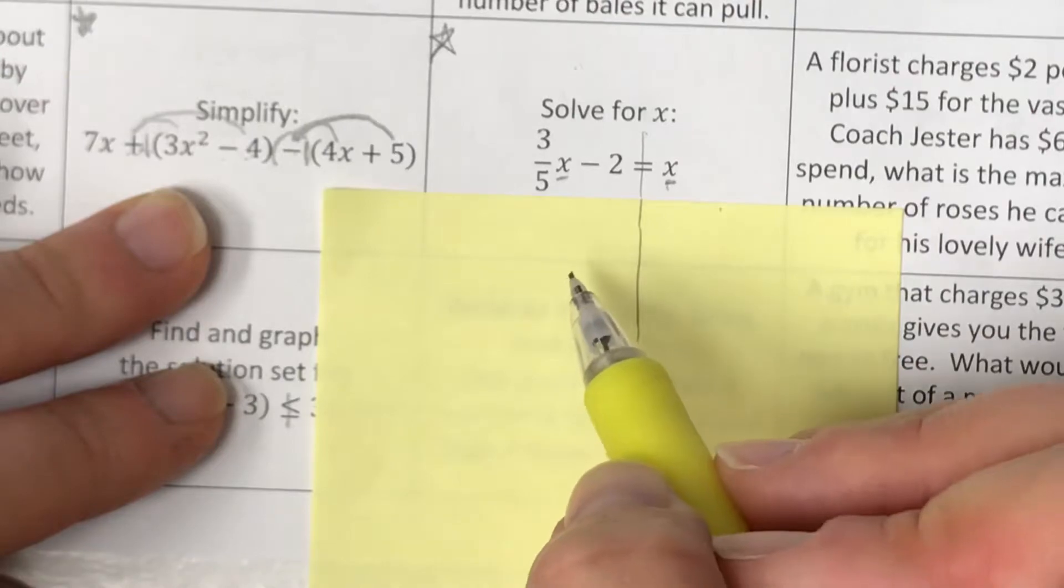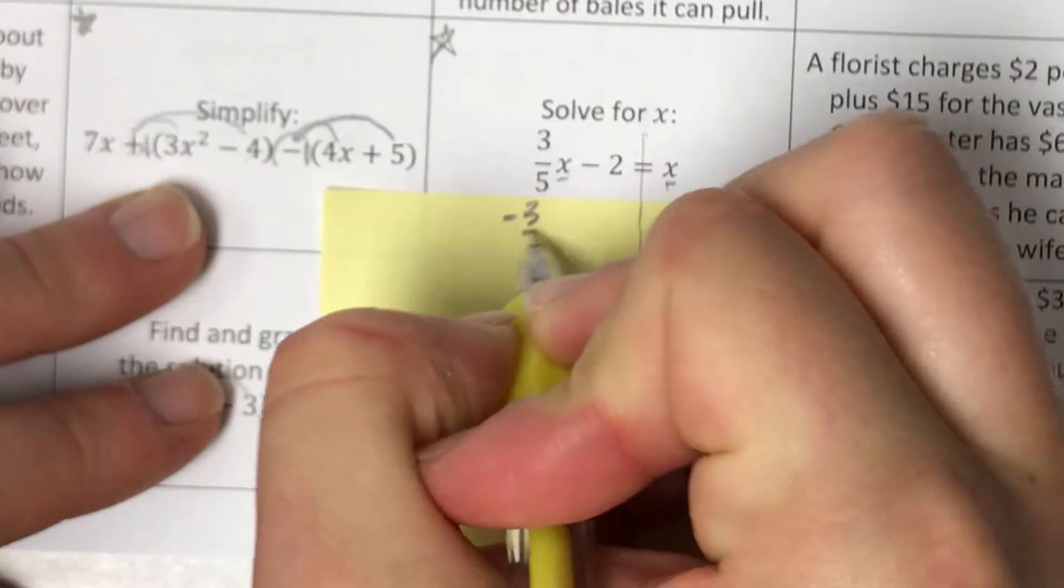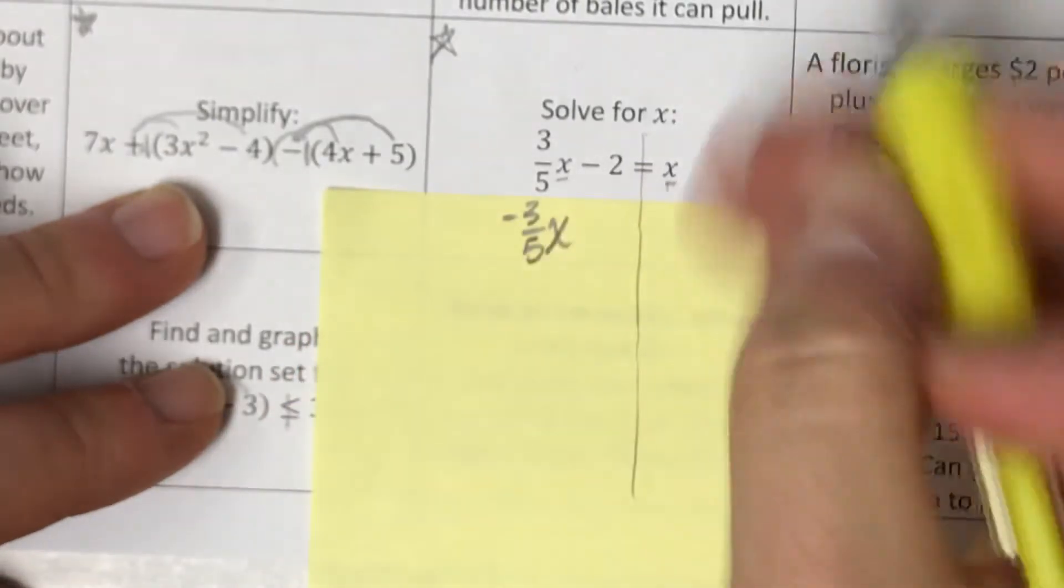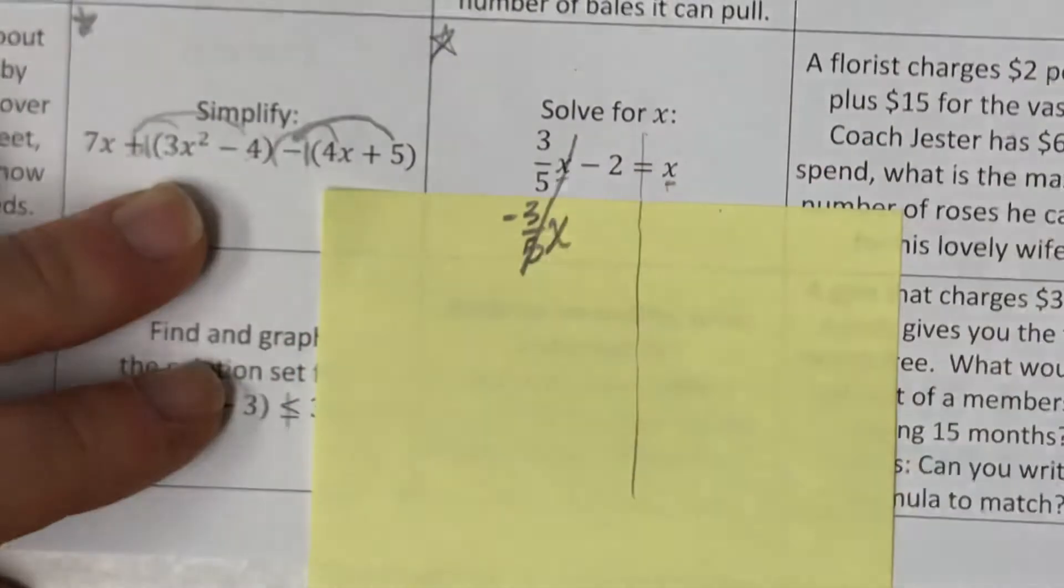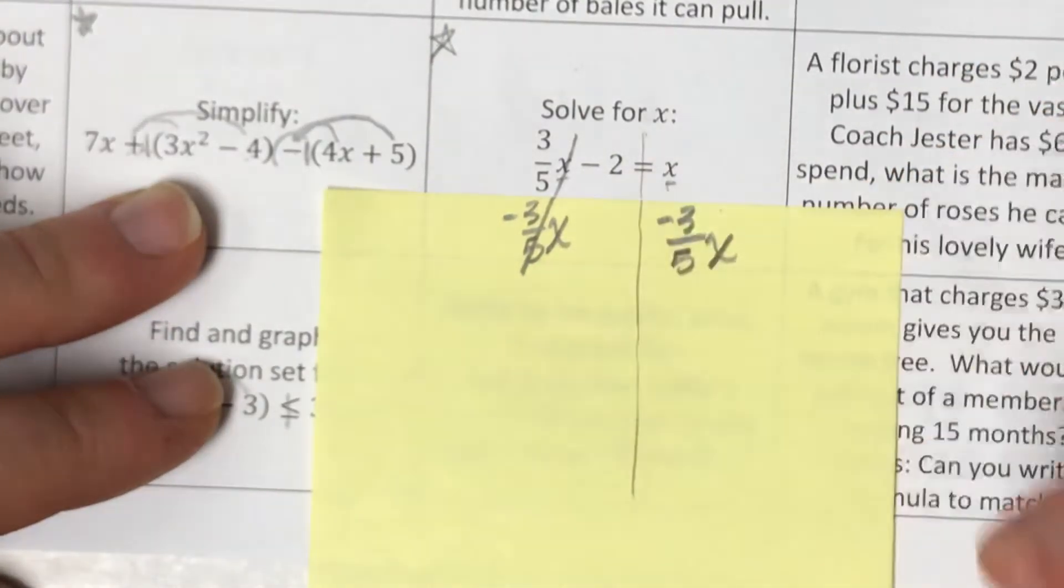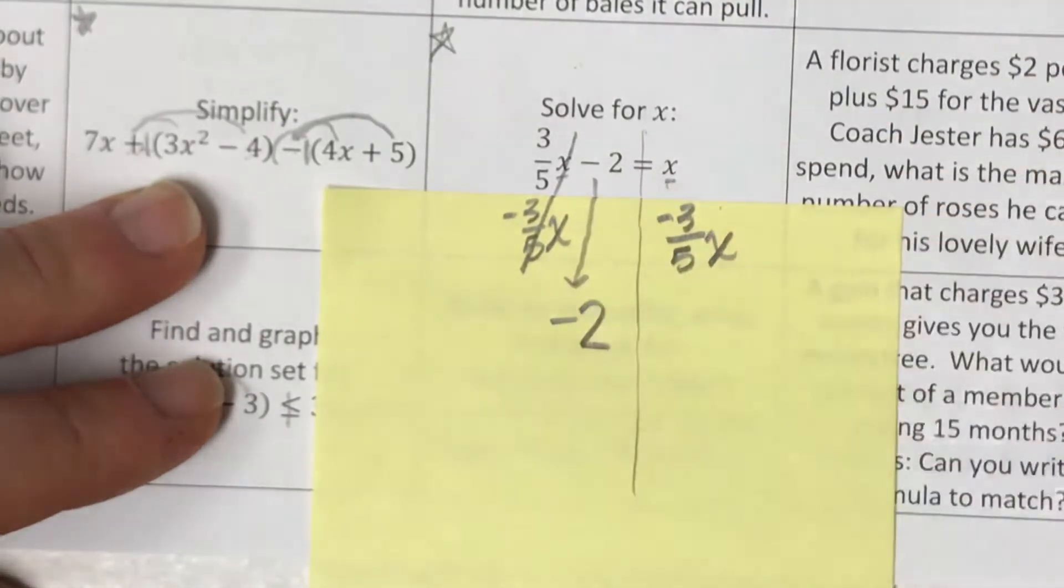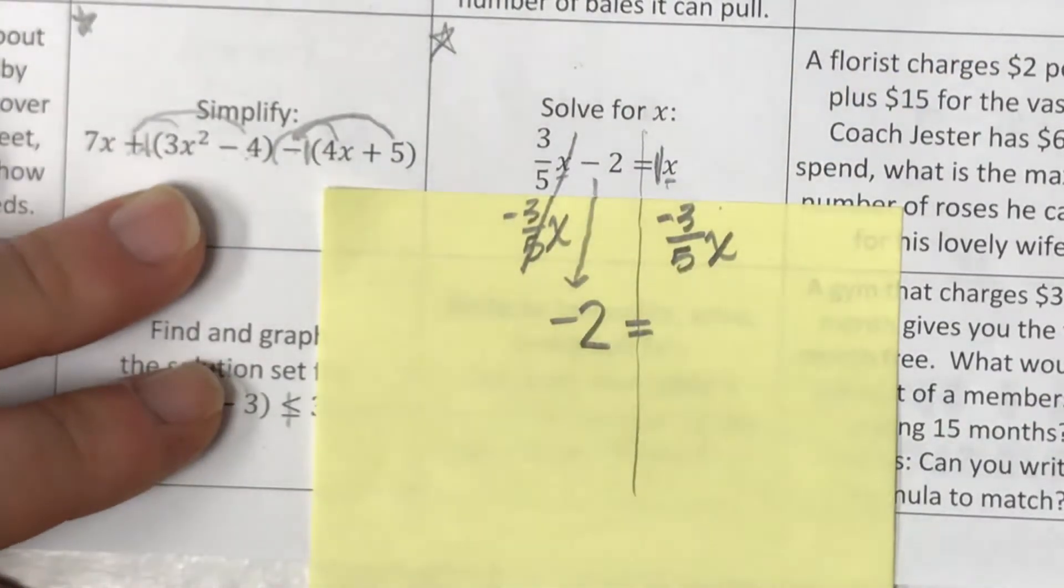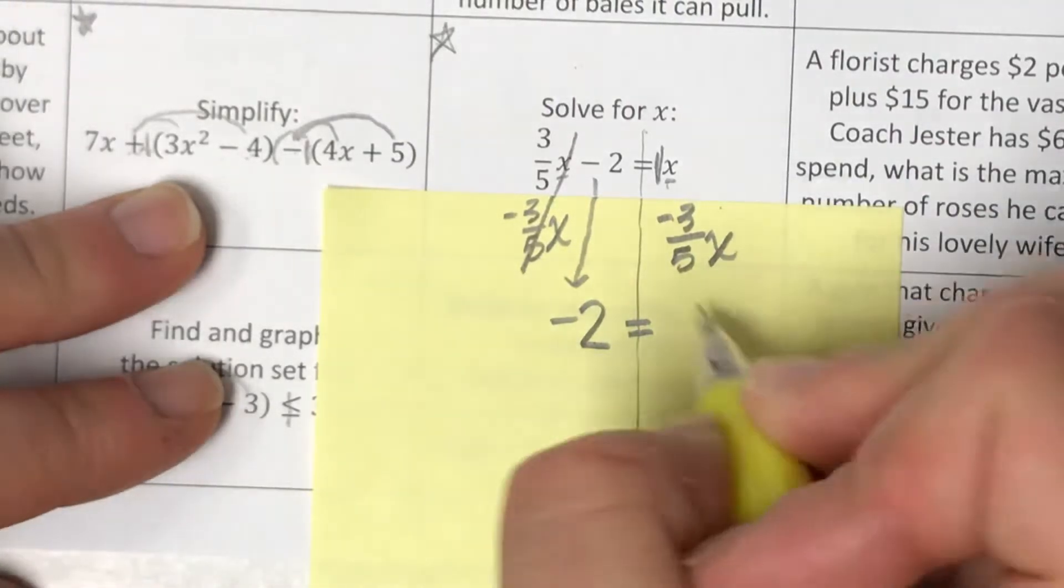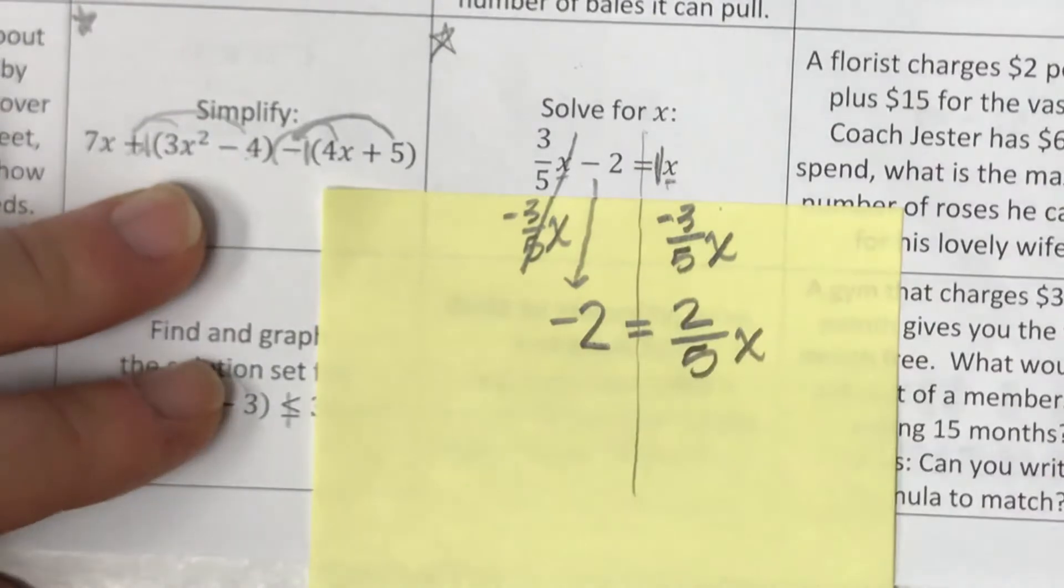But I'm going to go ahead and subtract 3 fifths x so that 3 fifths minus 3 fifths cancels. I'm going to subtract 3 fifths x over here. So I get negative 2. That negative has to pull down with the 2 equals. Now you've got to have some number sense. One whole minus 3 fifths leaves behind 2 fifths x. I don't need to go to negatives.